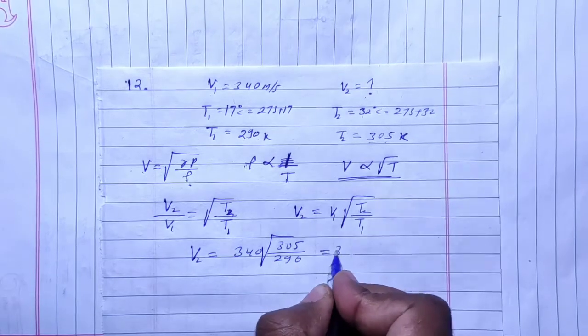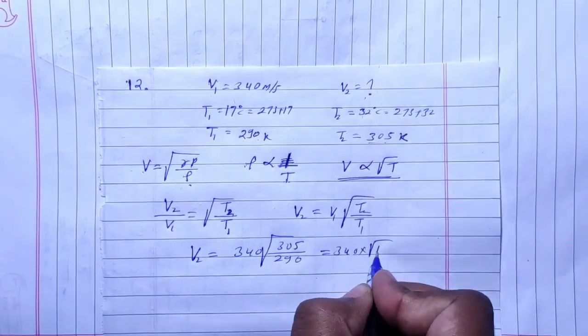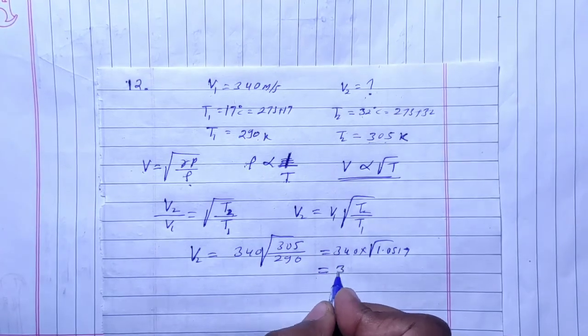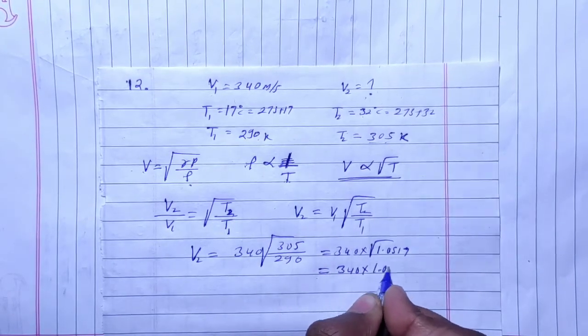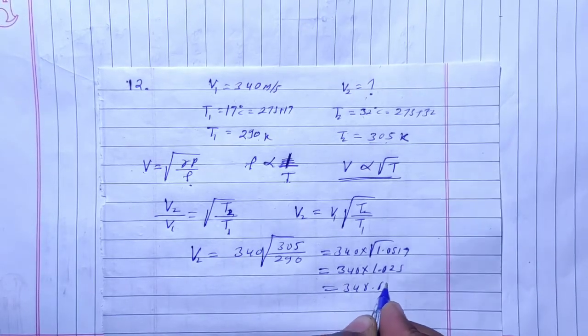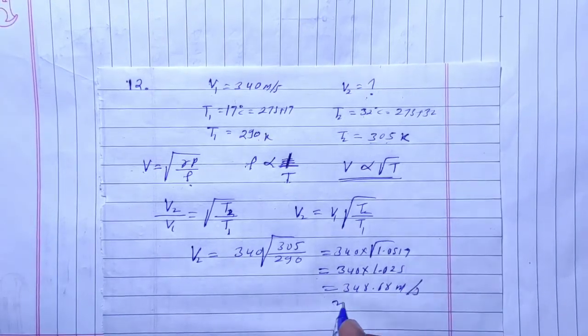So if we have 340 into root of 1.0517, then if we have 340 into 1.025 and multiply it, we get 348.68 meter per second. Approximately 349 meter per second.